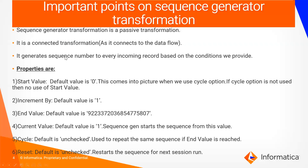Now for the important points: the Sequence Generator transformation is a passive transformation, meaning the number of input records equals the number of output records. It is also a connected transformation because it connects to the data flow and generates a sequence number for every incoming record based on the configured properties.